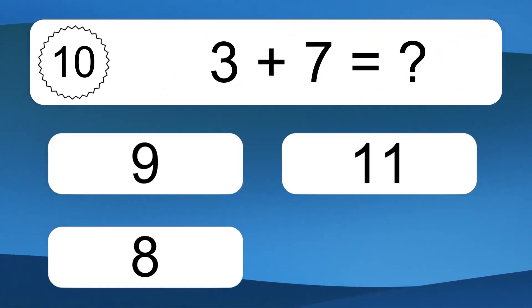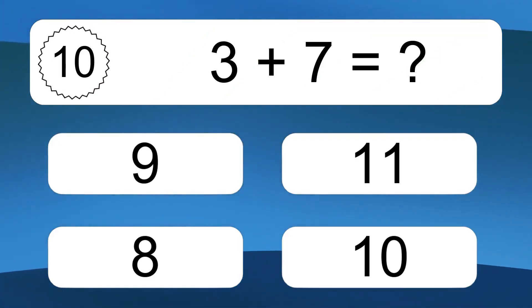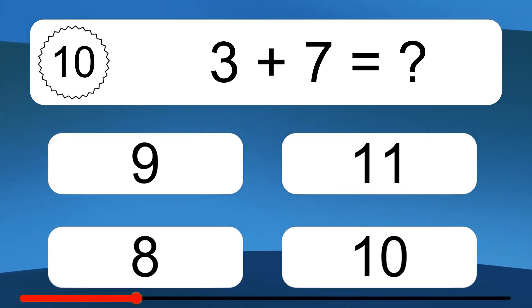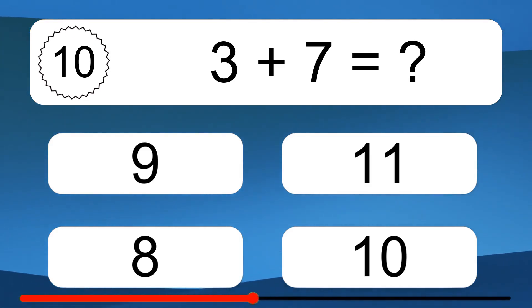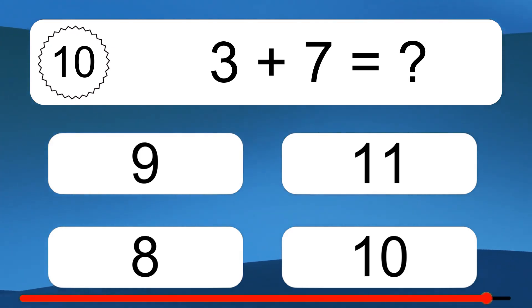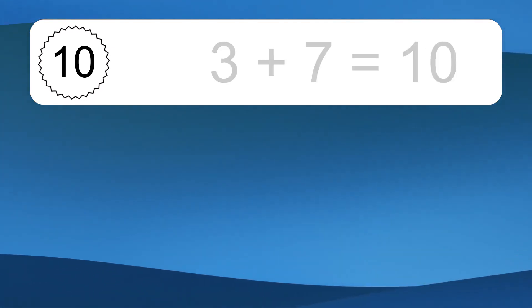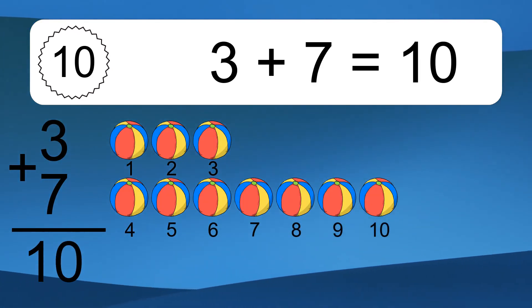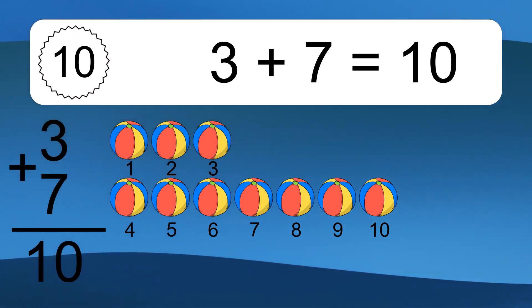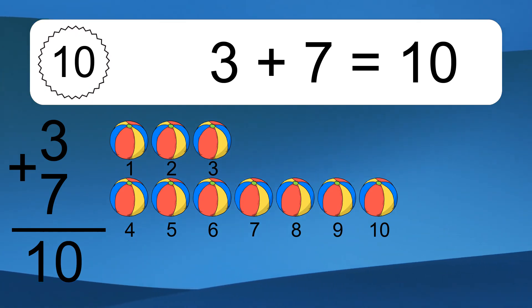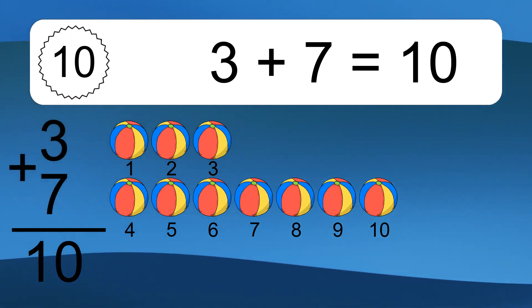3 plus 7 equals what? 3 plus 7 equals 10. Let's count it. 1, 2, 3, 4, 5, 6, 7, 8, 9, 10.